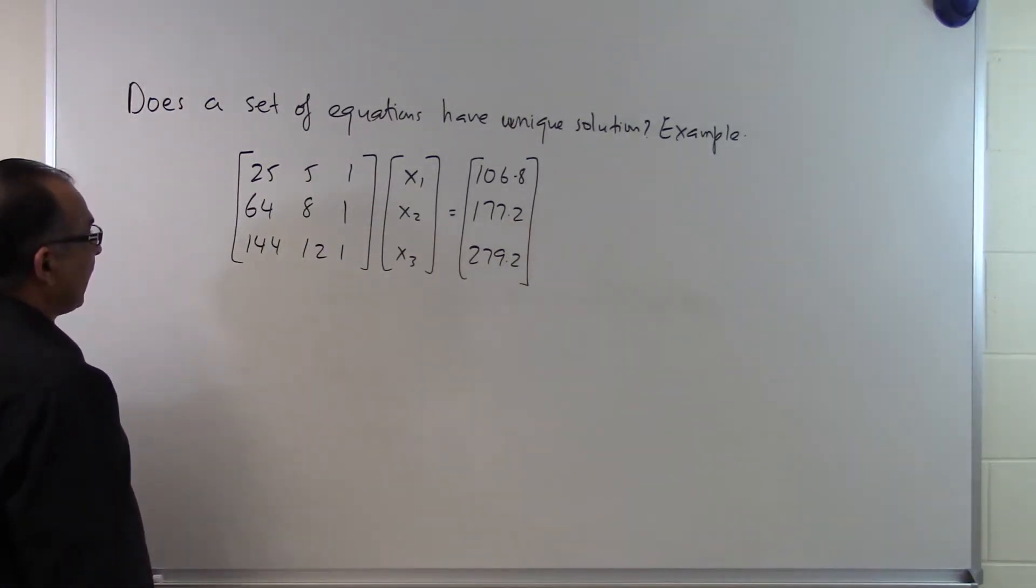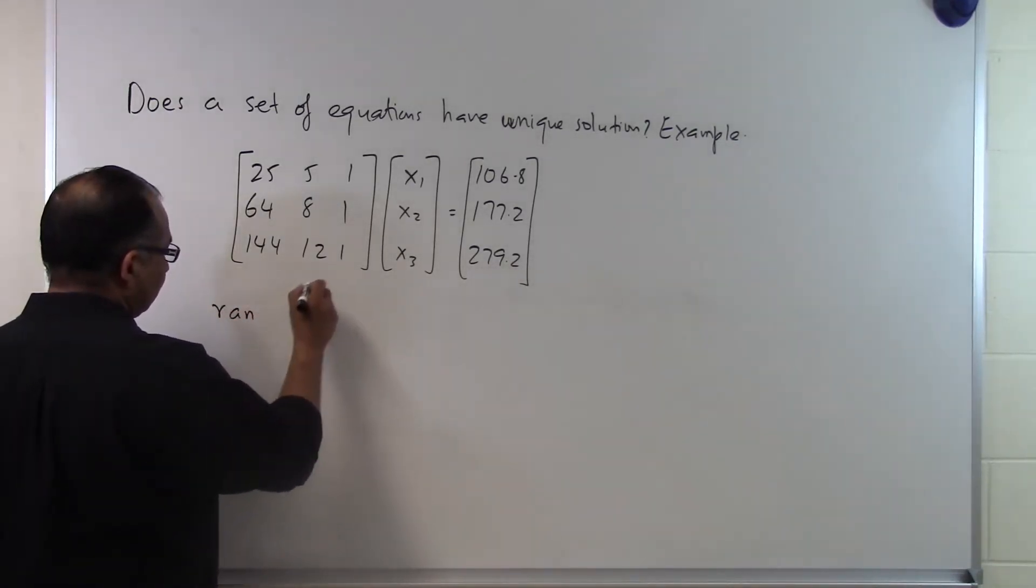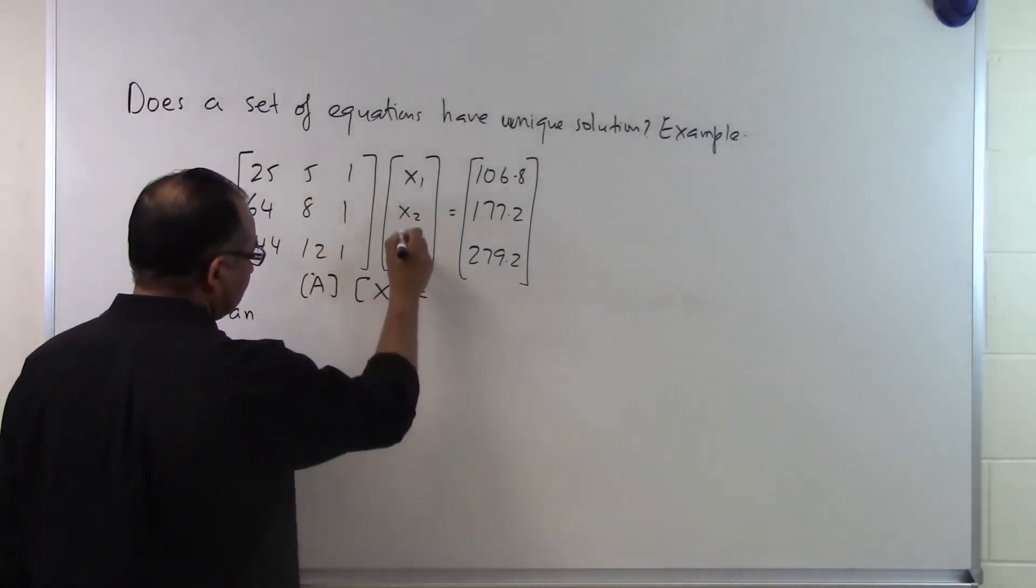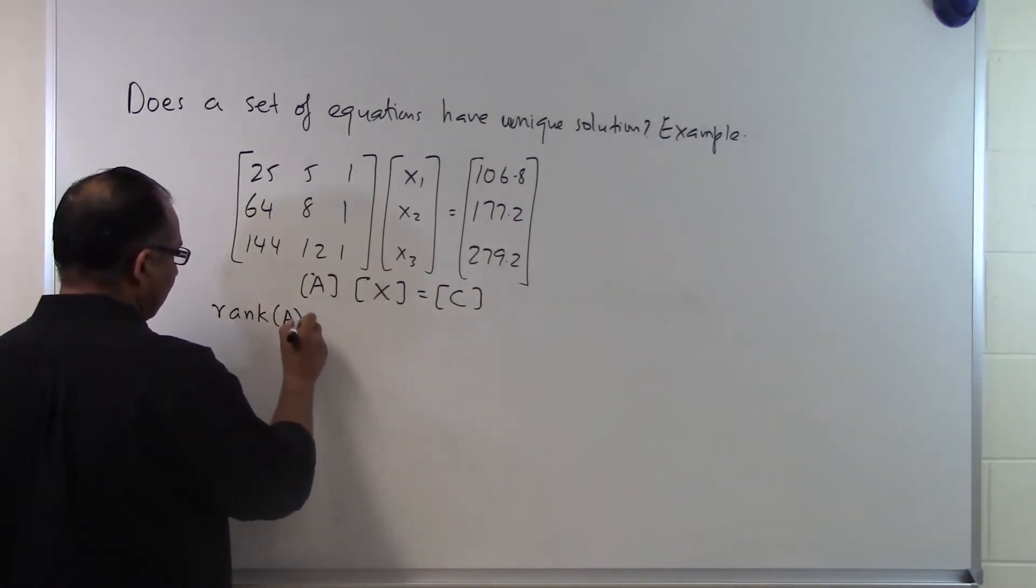What we are asked to do is check whether it has a unique solution or not. The first thing we have to do is check the rank. If we call this A, the coefficient matrix, x the unknown vector, and c the right-hand side, the first thing we check is the rank of A.